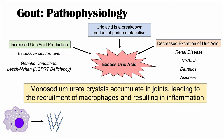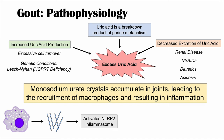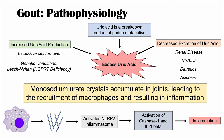Macrophages see these crystals and attempt to phagocytize them. When macrophages phagocytize these crystals, it activates the NLRP3 inflammasome. This leads to activation of caspase-1 and interleukin-1 beta, and ultimately inflammation, which can cause damage to the joint. This is the brief mechanism by which monosodium urate crystals lead to inflammation.